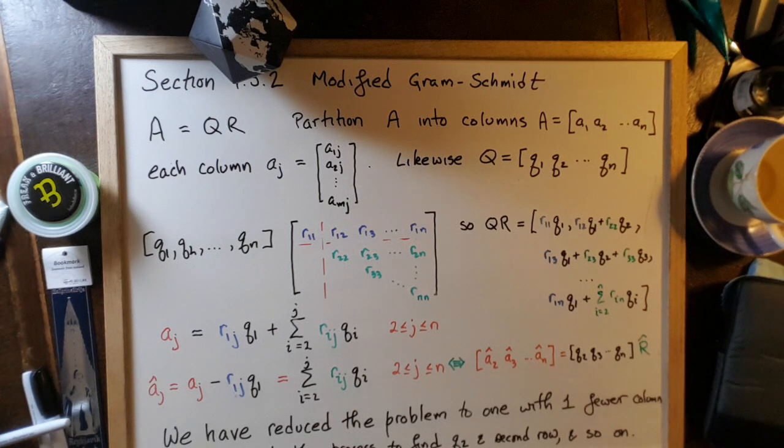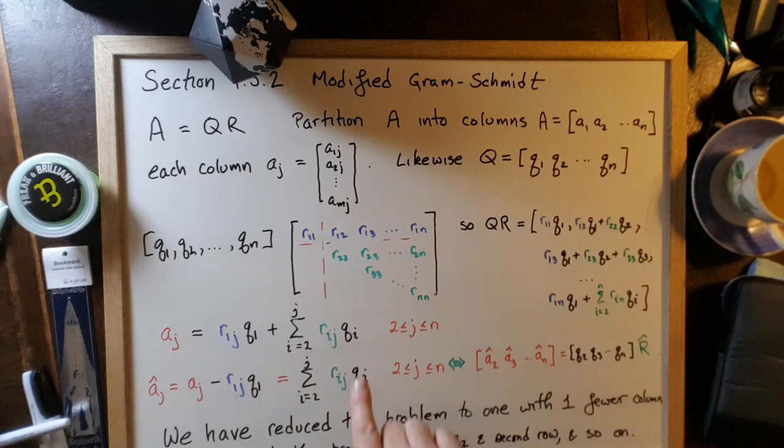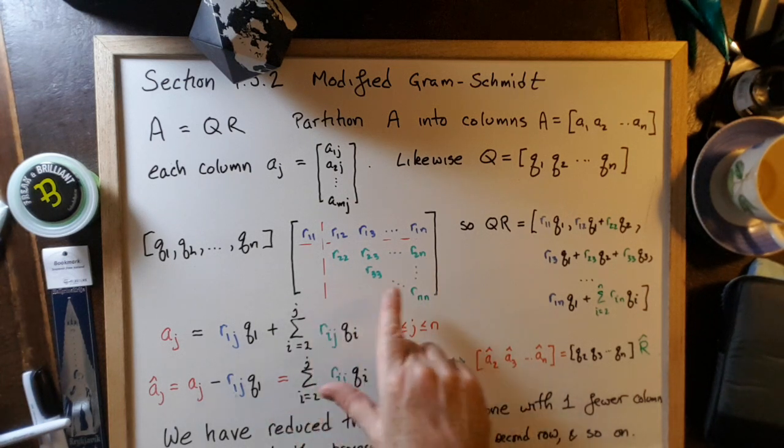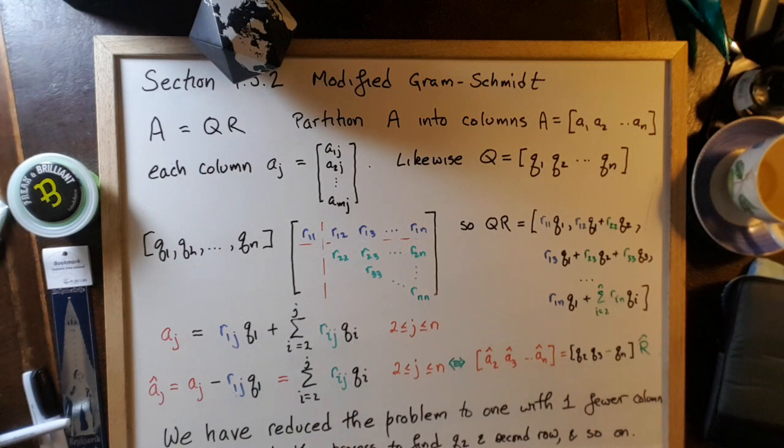Let's just do it again. Repeat the process to find Q2. We find the second row of R's, and then we repeat the process again to find R33 and the third row, and so on.